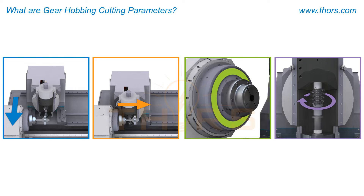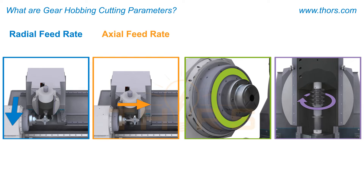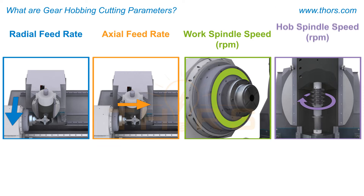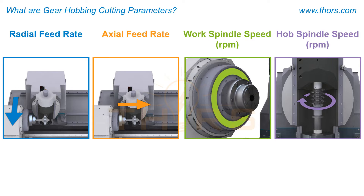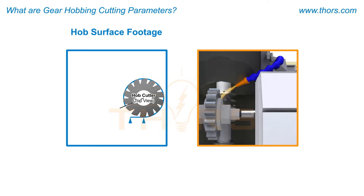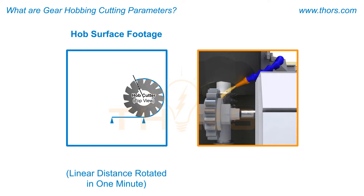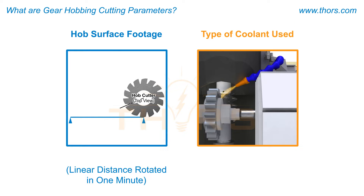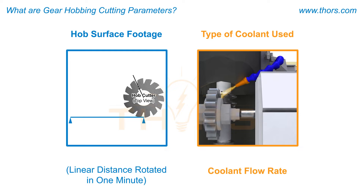The primary cutting parameters for gear hobbing include the radial feed rate, the axial feed rate, the work spindle speed or work spindle RPM, and the hob spindle speed or hob spindle RPM. Other crucial factors to consider include the hob surface footage, which is the linear distance that a specific location on a rotating component travels in one minute, the type of coolant used, and coolant flow rate.